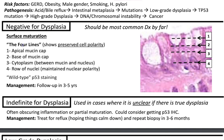There is the four-lines tool, which helps determine if there is preserved cell polarity. If four lines are not easily identifiable, you want to think about the presence of dysplasia. The four lines are: your apical mucin, the base of the mucin cap, cytoplasm between the mucin and the nuclei, and the fourth line is the row of nuclei. This indicates maintained nuclear polarity.